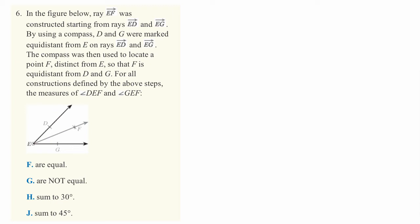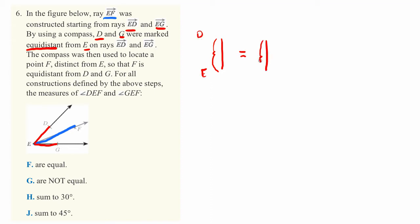In the figure below, ray E to F was constructed by starting from rays E to D and E to G — those are the two separate rays down below. By using a compass, D and G were marked equidistant from E. That means the length of segment ED equals the length of segment EG. I drew them the same color to indicate they have the same length.